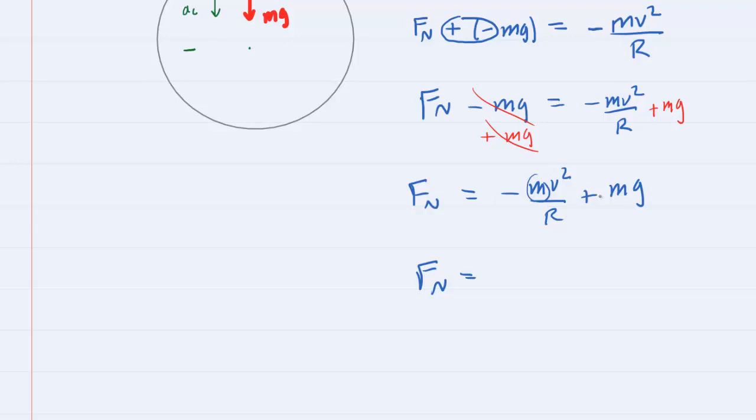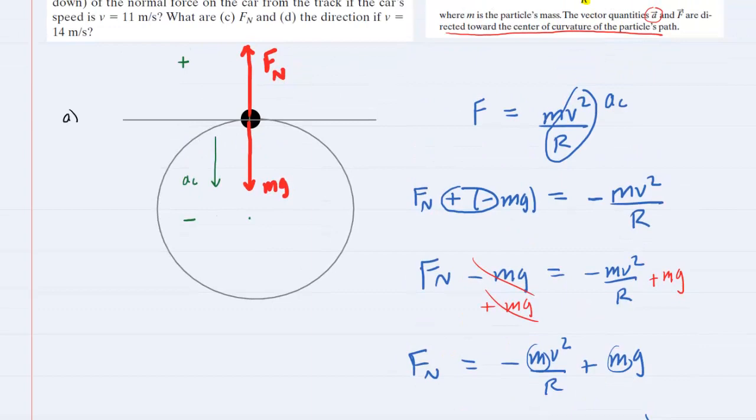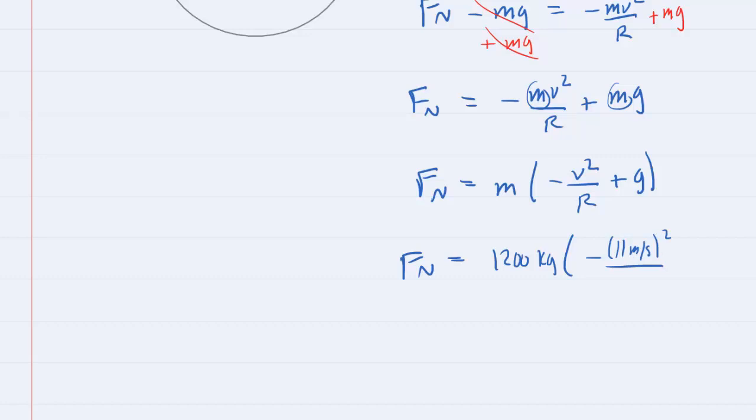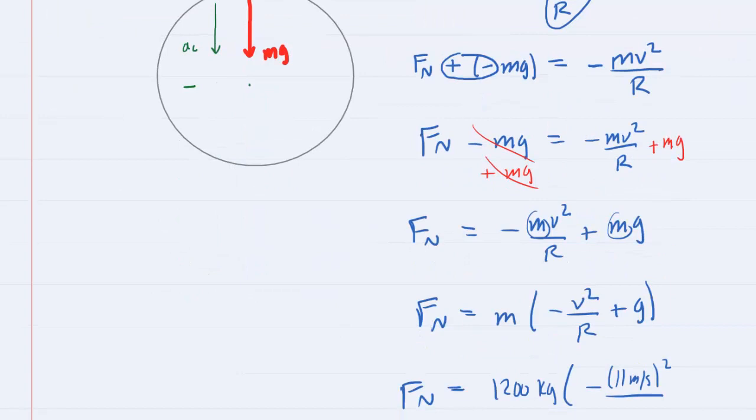You can even factor out the mass because it's a greatest common factor. So we would have mass multiplied by negative v squared over r plus g. Now we will plug in the known values. The mass of the rollercoaster cart is given as 1,200 kilograms. The speed v is given as 11 meters per second for the first half of this question. So we'll have 11 meters per second, and then don't forget to square it, divided by the radius of this circular path, which is 18 meters.